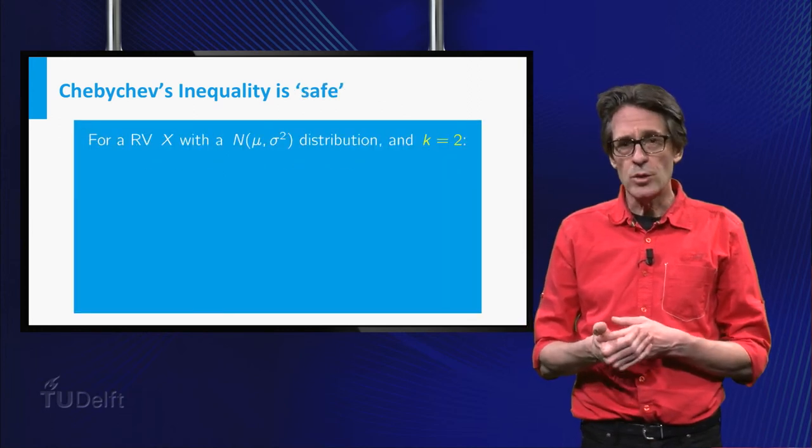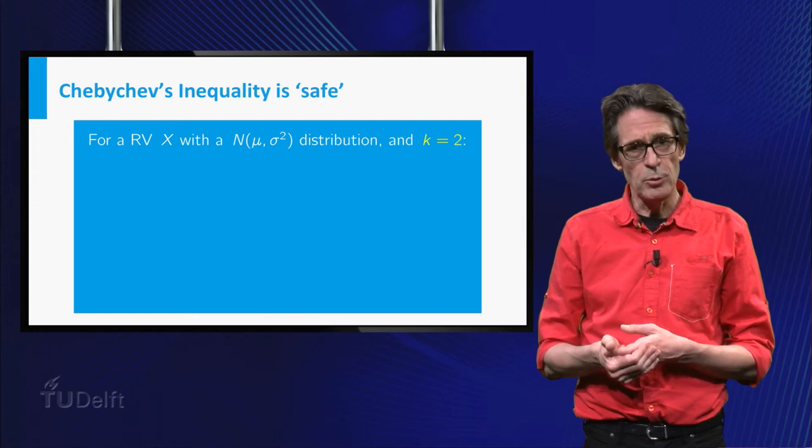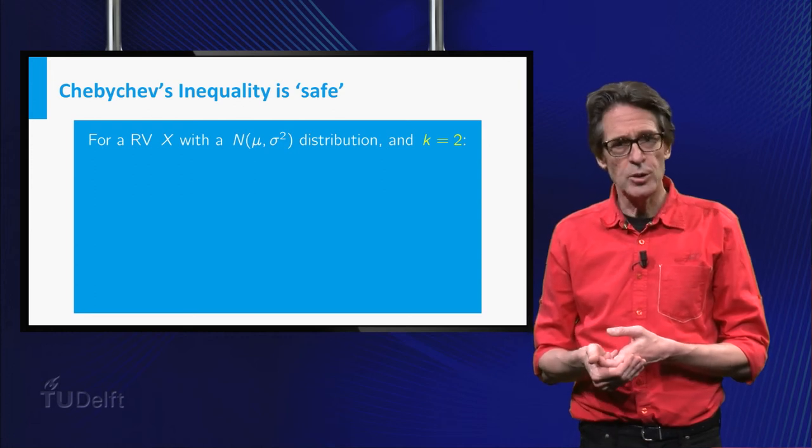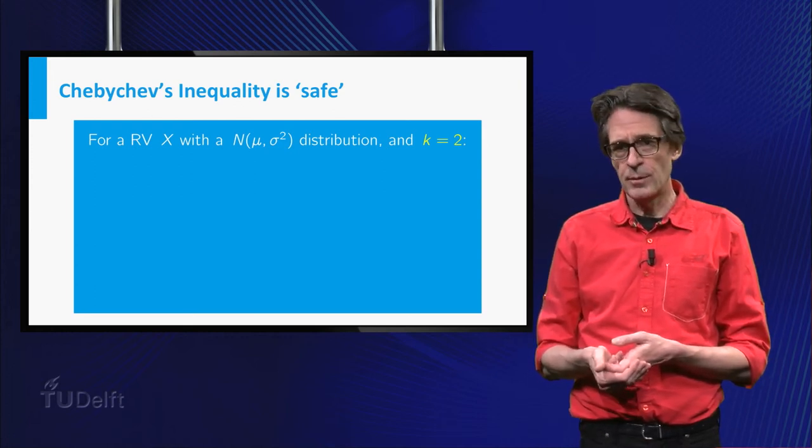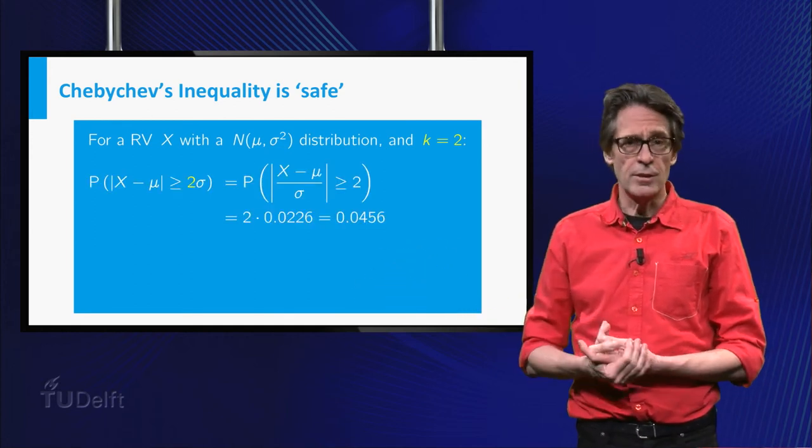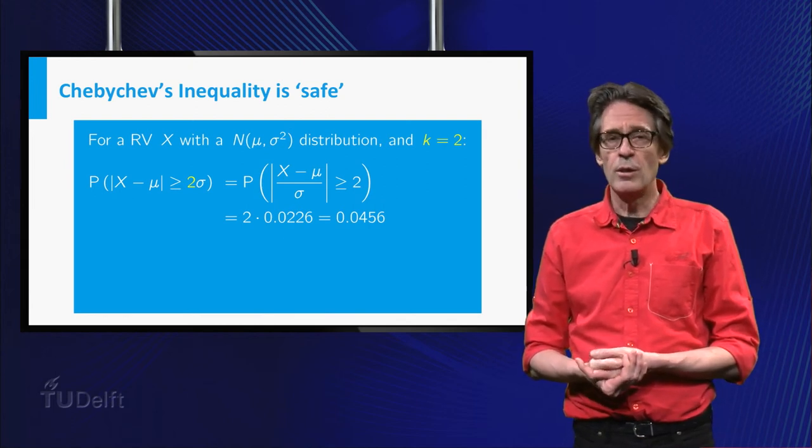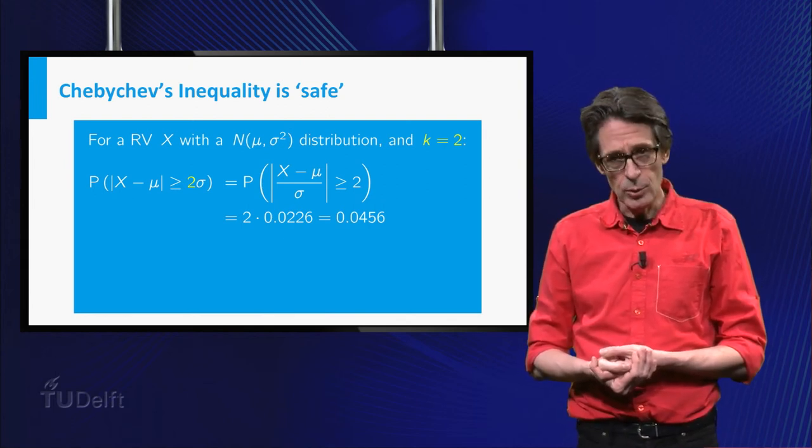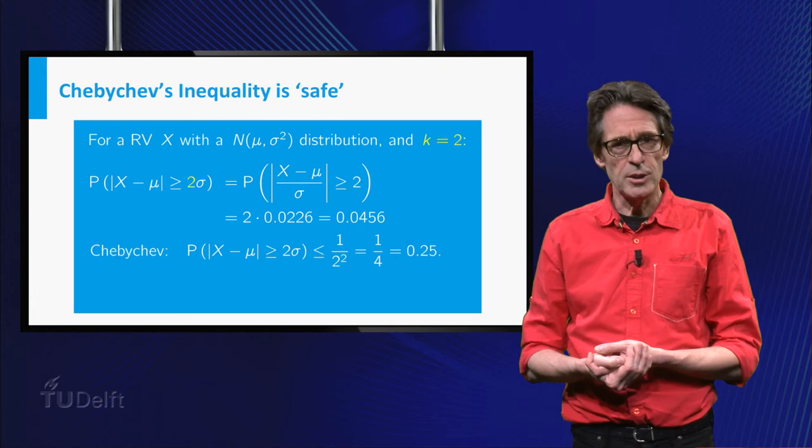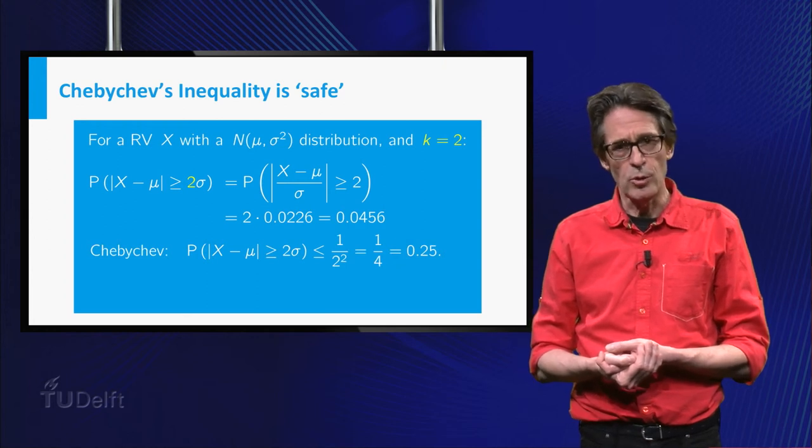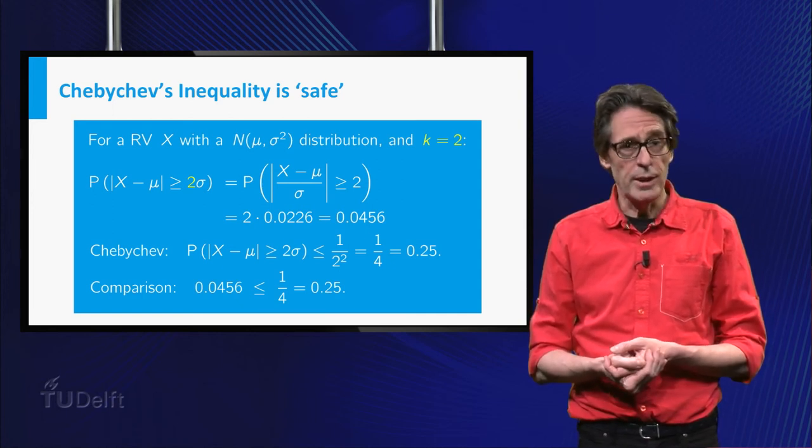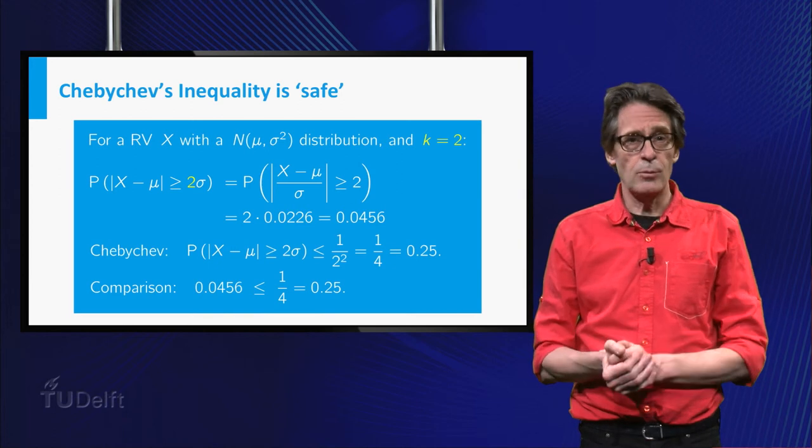Second, suppose X has a normal distribution with expectation μ and variance σ². In this case, the probabilities of outcomes more than k times σ from μ can be calculated explicitly. For instance, for k equals 2, by standardizing we find that the probability that X deviates more than 2σ from μ equals 0.0456. Chebyshev's inequality gives that this probability is at most 0.25. Again, no one will deny that 0.0456 is smaller than 0.25. Quite a bit, I would say.